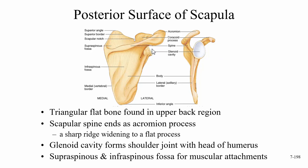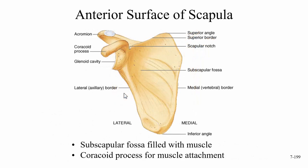Think about it logically: your arm attaches at the glenoid cavity, so it has to be lateral. That's your lateral border; the other side is your medial border.